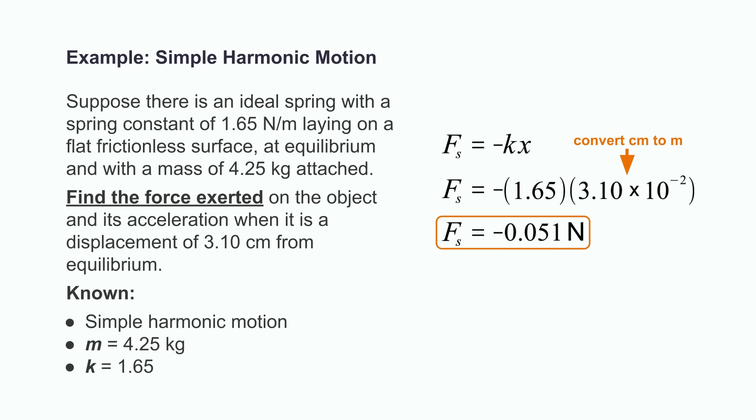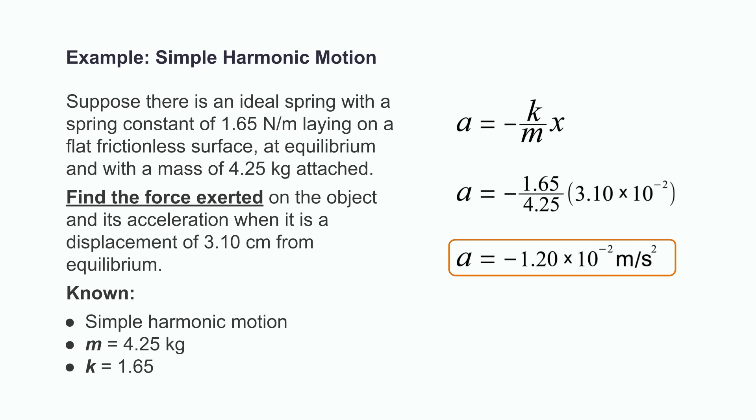After we convert our distance from centimeters to meters, we can simply substitute the values given into Hooke's law, and we find that there's a force of negative 0.051 newtons acting on the object. To find the object's acceleration, we use the formula derived earlier, and once again substitute in our known values. We can then calculate that the object is accelerating at a rate of negative 0.0120, or 1.2 times 10 to the negative second meters per second squared.